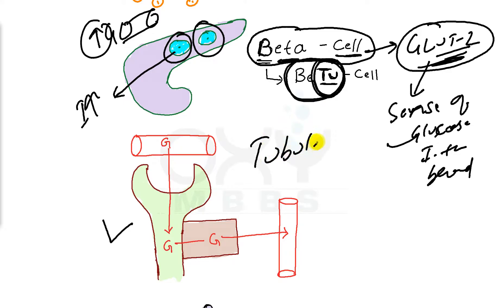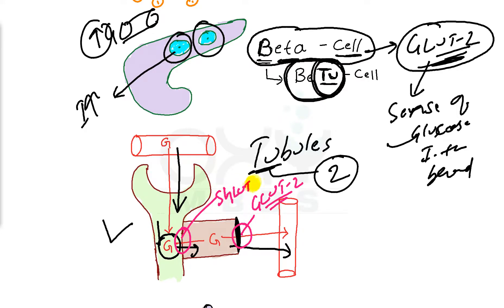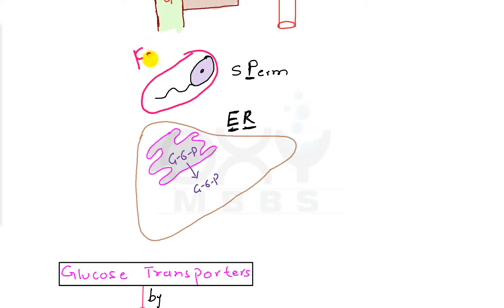Coming to the kidney tubules — 'tubules' itself contains number two. Because of ultrafiltration, glucose from the blood enters Bowman's capsule, then the proximal convoluted tubule, where it is taken up by tubular cells and reabsorbed from the basolateral membrane back into the bloodstream. The tubular cells have GLUT2 on the basolateral membrane and SGLT2 on the apical membrane — both are number 2, but they differ in location.